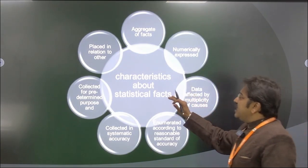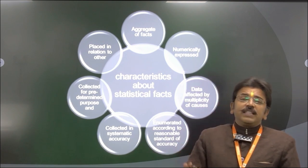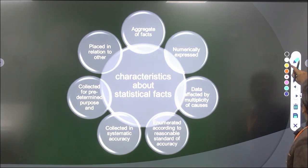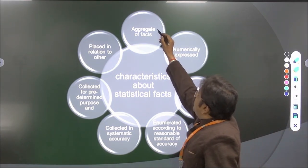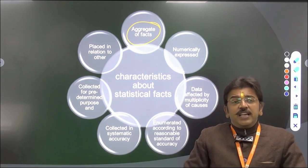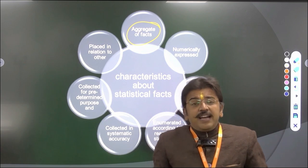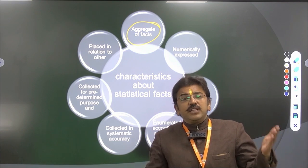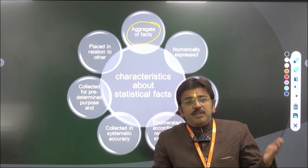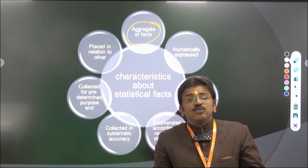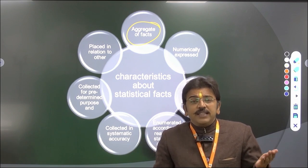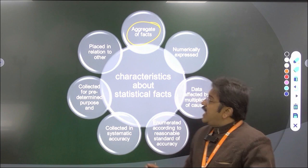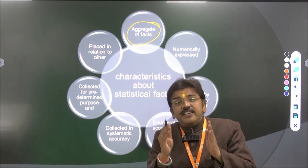Now, the characteristics of statistical facts: the first characteristic is that it is an aggregate of facts. We collect data, and when a sample size is more than 500, we calculate the mean, mode, and median values, and then apply statistical tools such as correlation, regression, and chi-square. The second characteristic is that data is numerically expressed — all data taken is expressed numerically.